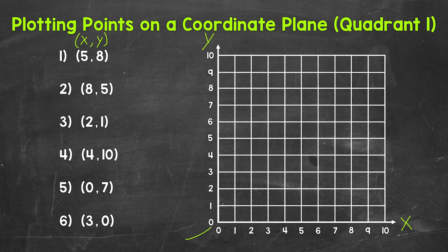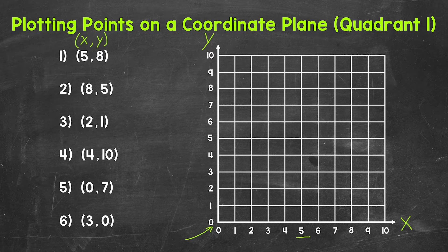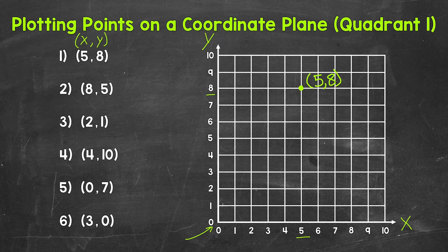So that's where we start — the origin, which is at 0, 0. We always start by working horizontally, so we take a look at the x-axis. Our x-coordinate is 5, so let's go over 5. And then we work vertically, so we take a look at the y-axis. Our y-coordinate is 8, so we go over 5 and up 8. We plot this point right here and label it 5, 8. Over 5, up 8.